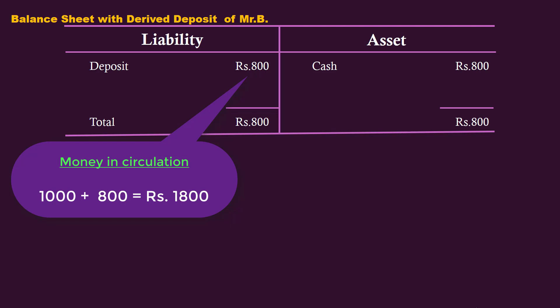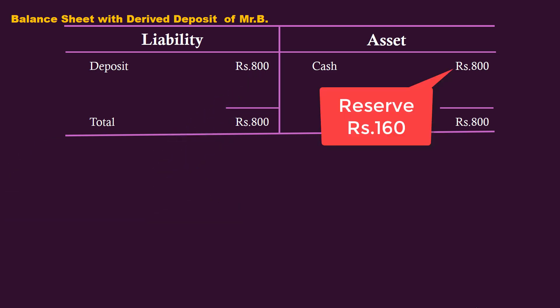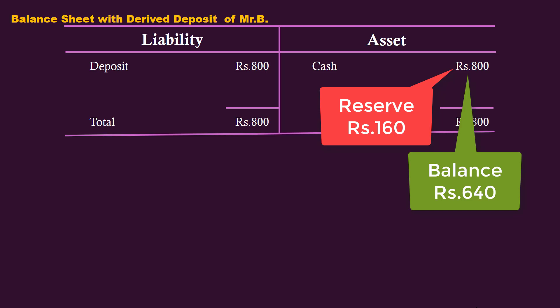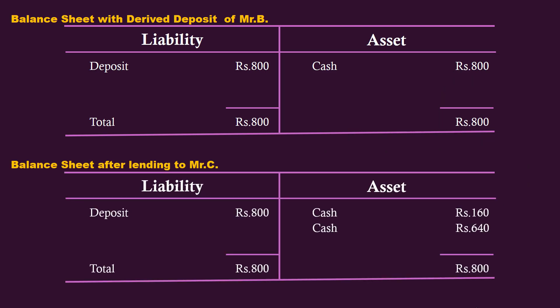Money in circulation increases from 1000 rupees to 1800 rupees. The bank keeps 20% of the 800 rupee deposit and lends 640 rupees to Mr. C. As before, cash becomes 160 rupees, and an entry of 640 rupees is made to show the loan to Mr. C. The bank creates a deposit in the name of Mr. C and deposits the loan amount.